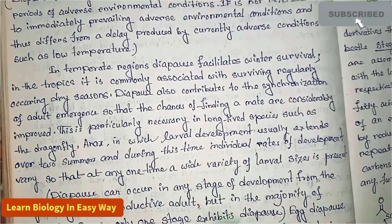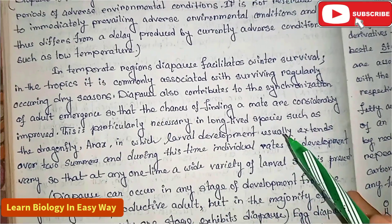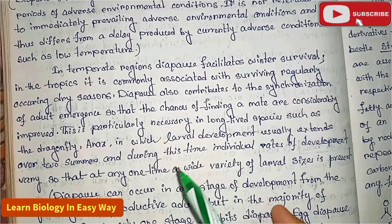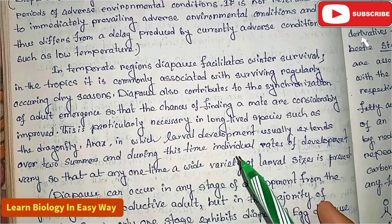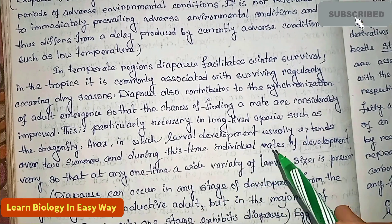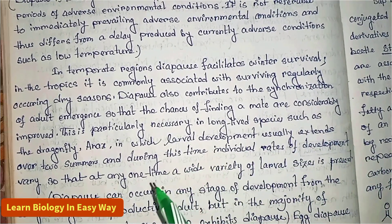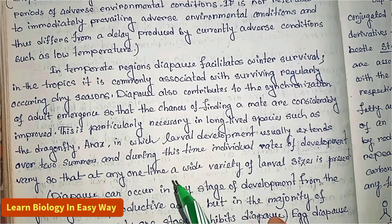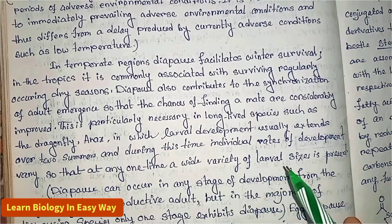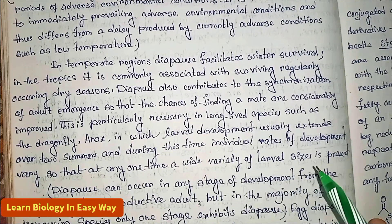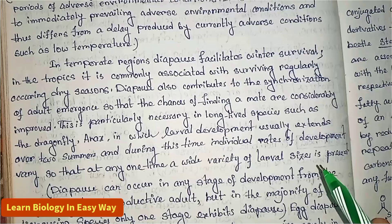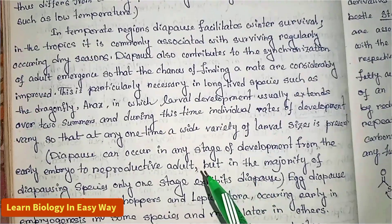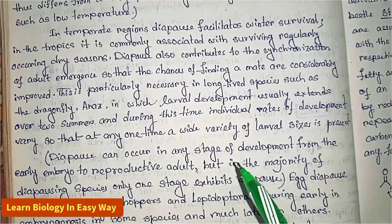In long-lived species such as the dragonfly, larval development usually extends over two summers, and during this time individual rates of development vary, so that at any one time a wide variety of larval sizes is present. Diapause can occur in any stage of development, from the early embryo to the reproductive adult.